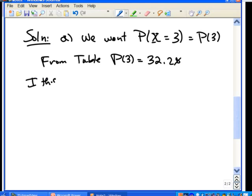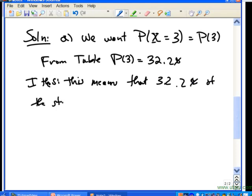So we can say P of 3 is 32.2%. So interpreting that solution, this means that 32.2% of the students were in 3 activities.